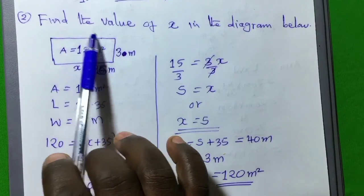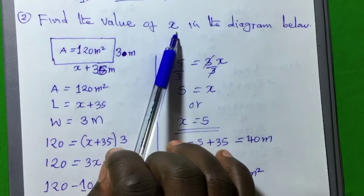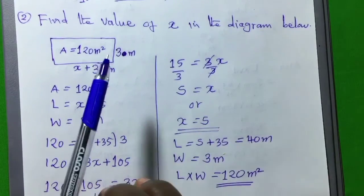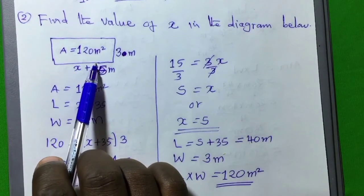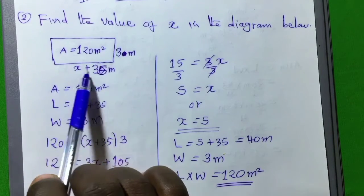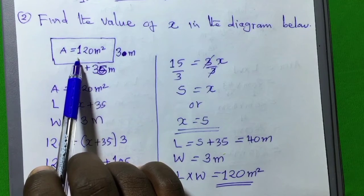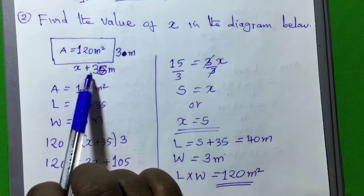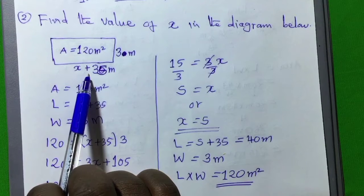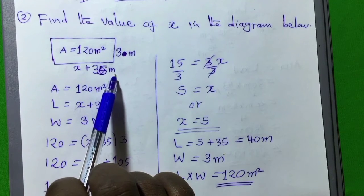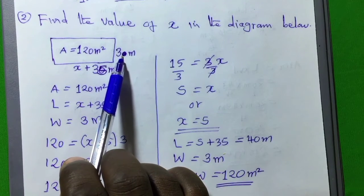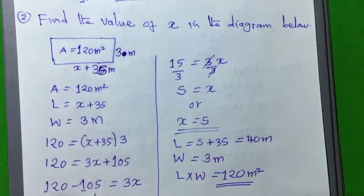The question here says, find the value of x in the diagram below. This is the diagram, inside this rectangular shape is the area. The area of this rectangle is 120 meters squared, the length of the rectangle is x plus 35 meters, and its width is already given which is 3 meters.